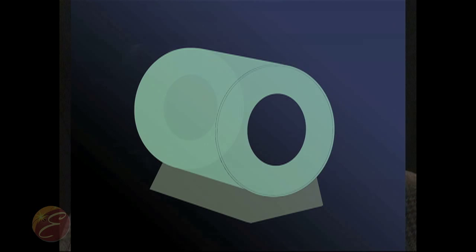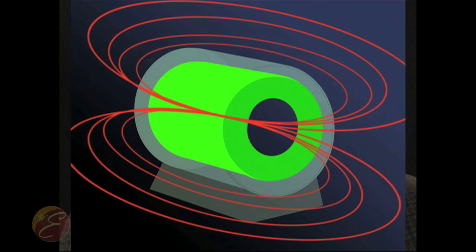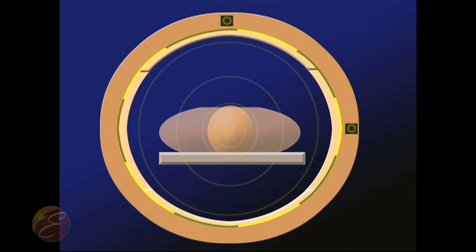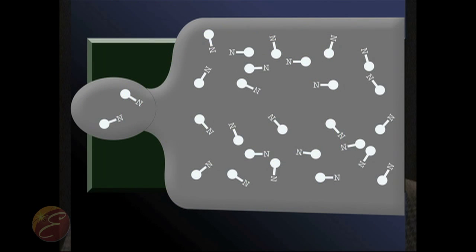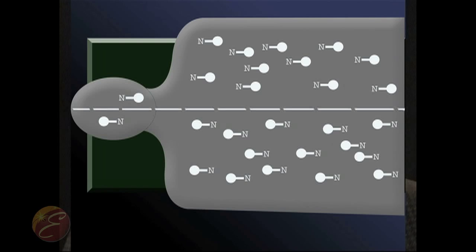If you take a human being and put him in one of these big, very homogeneous magnetic field magnets, then there's a tendency of that magnetic field to line up the magnetic moments of the nuclei — the spin of the nuclei and the hydrogen in your body, which is in your muscle and in your blood.